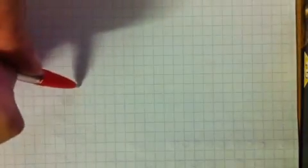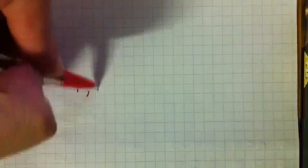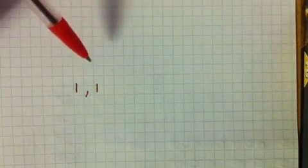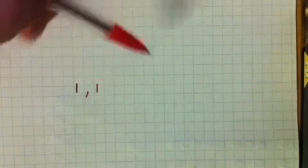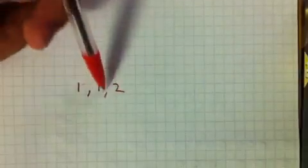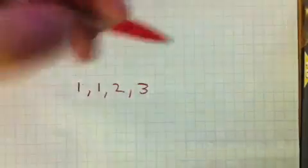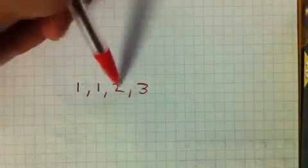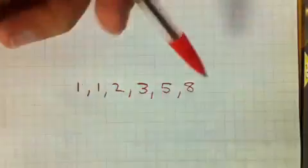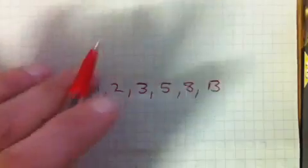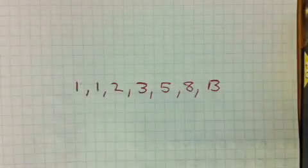We've already looked at the Fibonacci sequence, and we worked out that we get it by adding the two previous terms to get the next one. The first two terms are 1 and 1, so the third term is 1 plus 1 equals 2, then 2 plus 1 makes 3, then 3 plus 2 makes 5, then 5 plus 3 makes 8, then 8 plus 5 makes 13. And we can keep going and the numbers will get bigger and bigger, faster and faster.